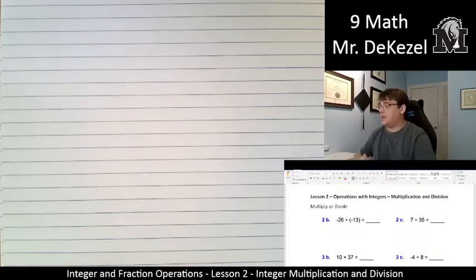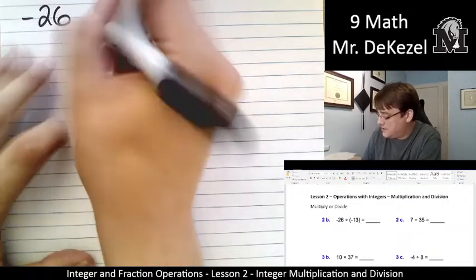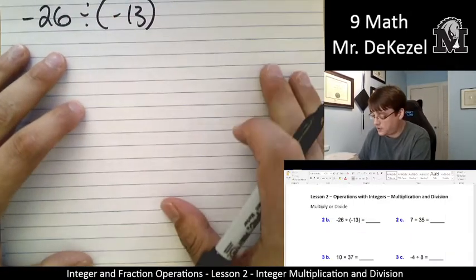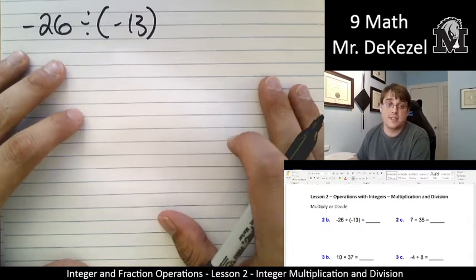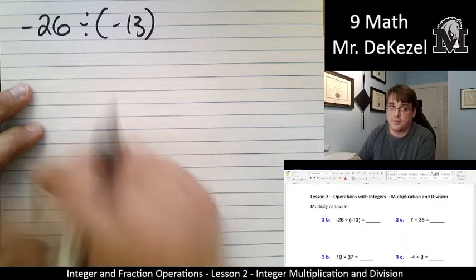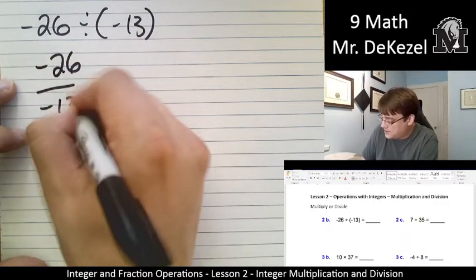Okay, let's see. We have first minus 26 divided by minus 13. You may see it written like this. I'll shift down just a little. You could also see it written, and how I often prefer to write it, as minus 26 over minus 13.